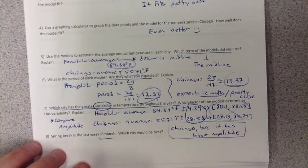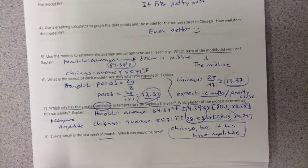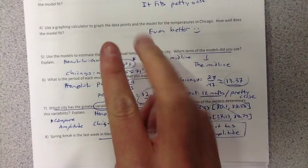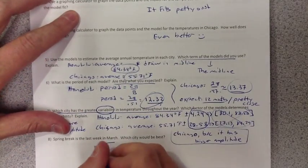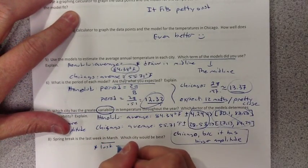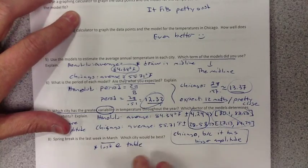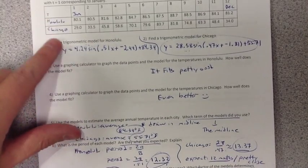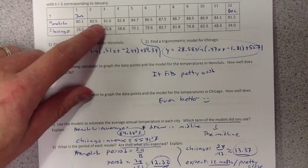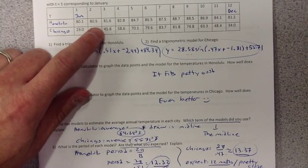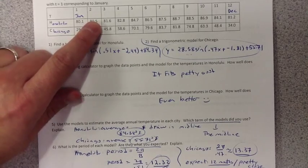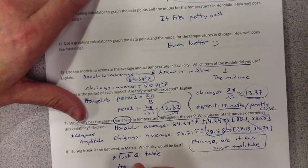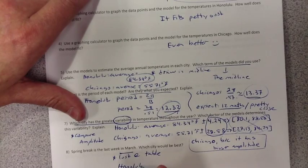Now, spring break is the last week in March. So, let's find out where that is. January, February, March, the third month. If we go up to here, this is just look at the table. If I look at the table, go to the third month. Which would be bigger, better for spring break? I definitely would think Honolulu at 81.6 degrees. Honolulu.